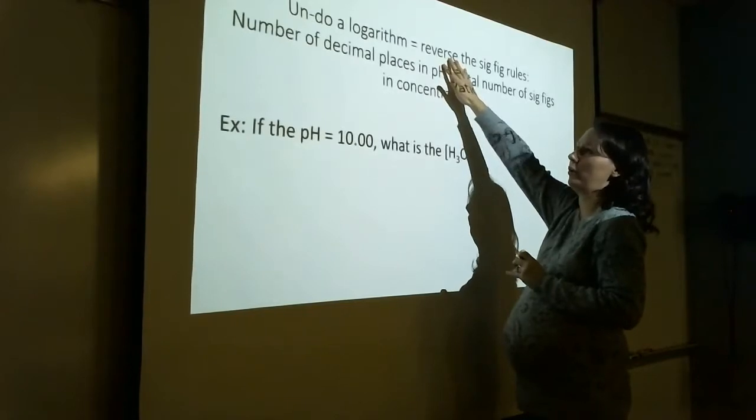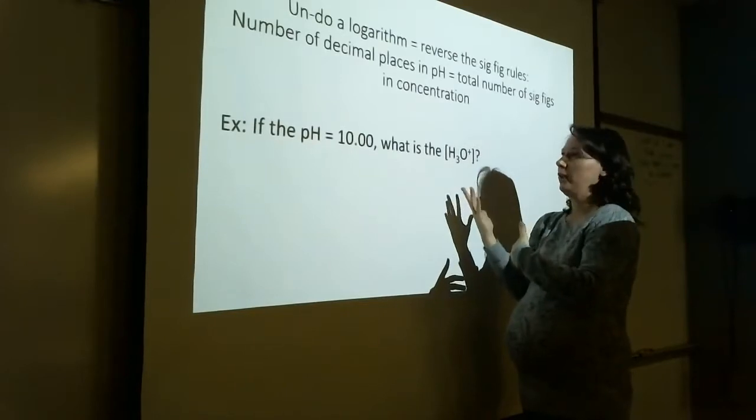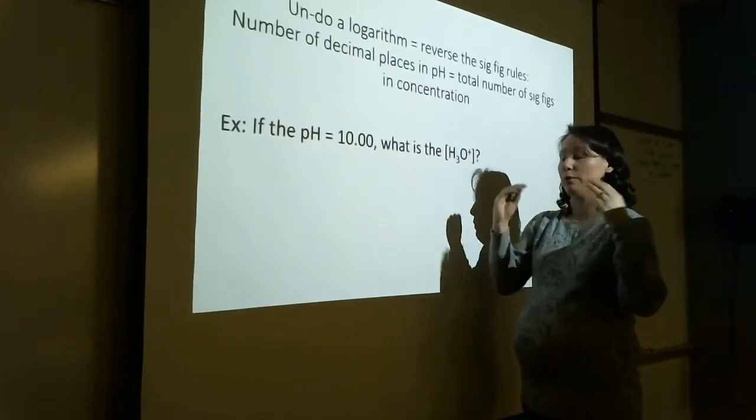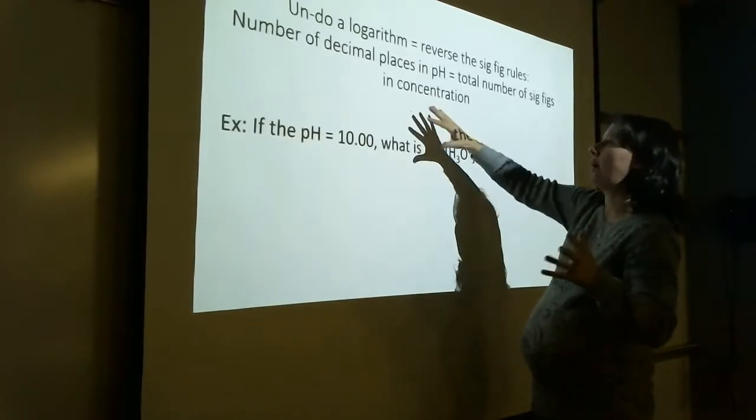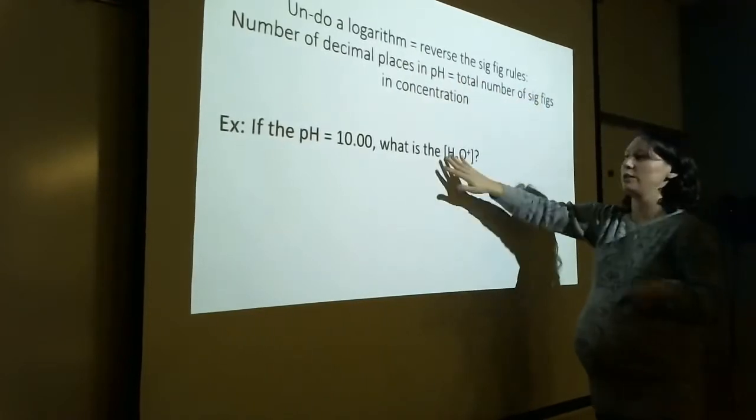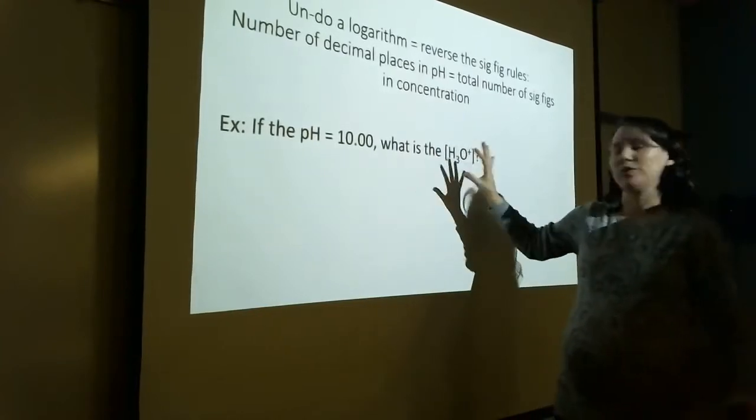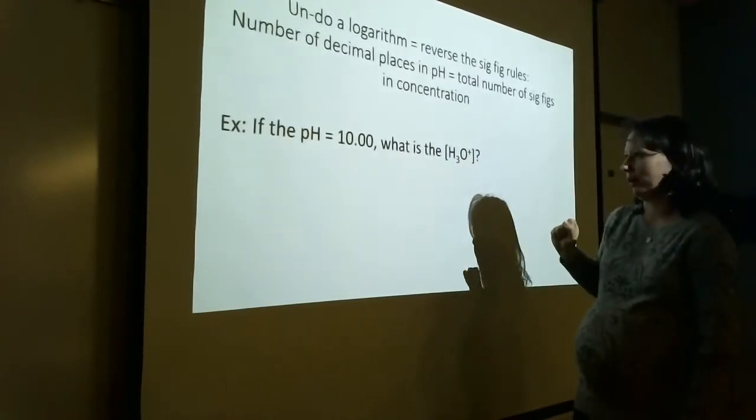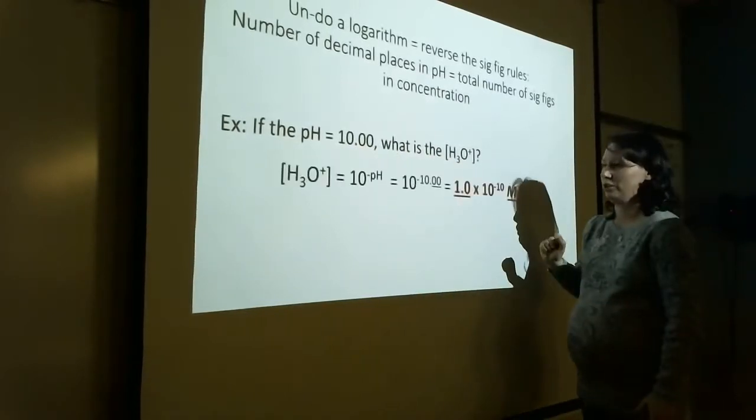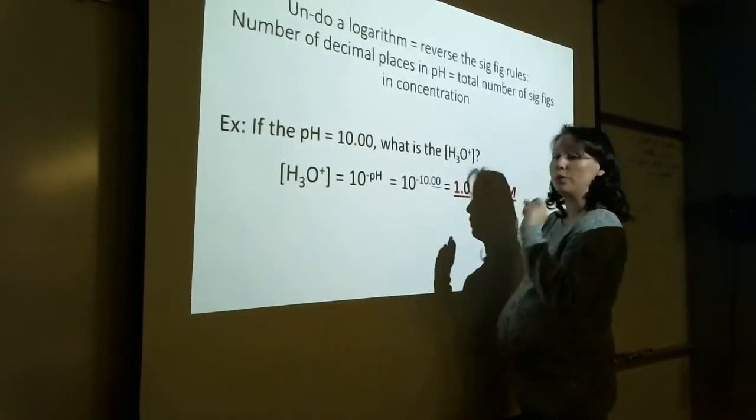Now when you go the other way, when you undo a logarithm, you're reversing your sig fig rules. For instance, you've got a logarithm and you want to know what the original number was. Well, to undo that logarithm, you would raise it to the 10. So now number of decimal places is total number of sig figs. Let's do this one in the context of pH, because this is the most likely condition that you'll be dealing with logarithms. If the pH is 10.00, what is the concentration?